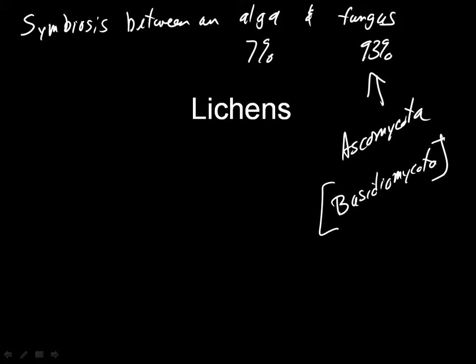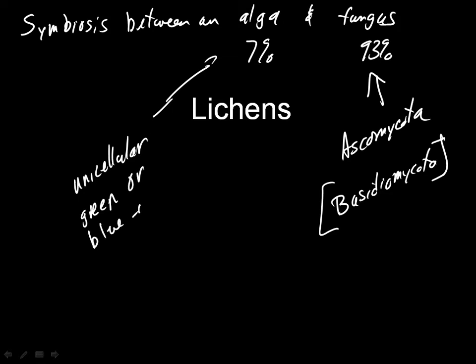The fungus looks like a typical member of the Ascomycota. The alga is always a unicellular green or blue-green — namely a cyanobacteria — alga. So it's a unicellular alga that, if you culture it alone, looks like a unicellular alga and divides mainly by mitosis. The fungus looks like a typical member of the Ascomycota.